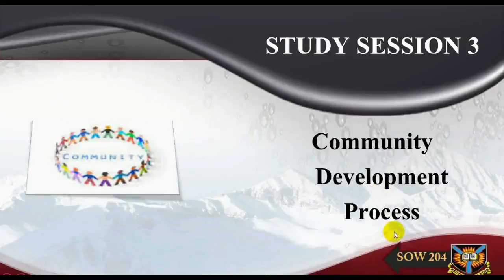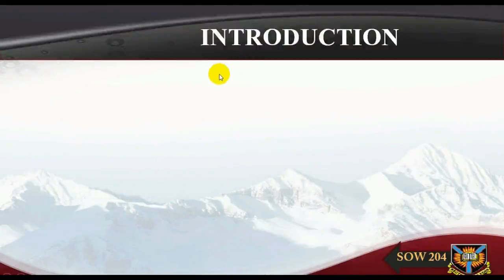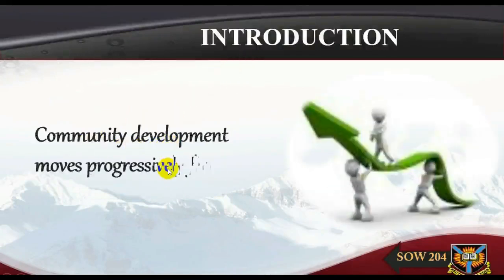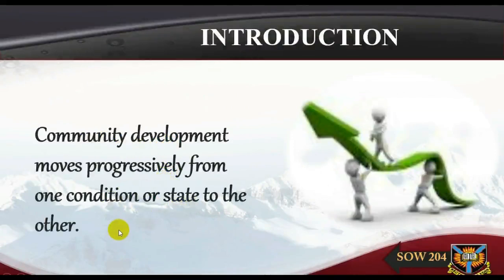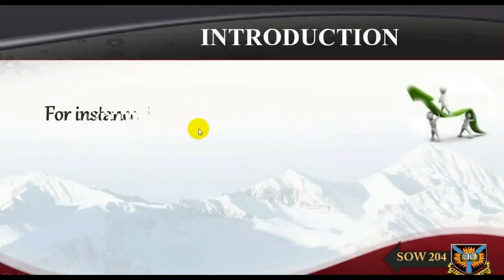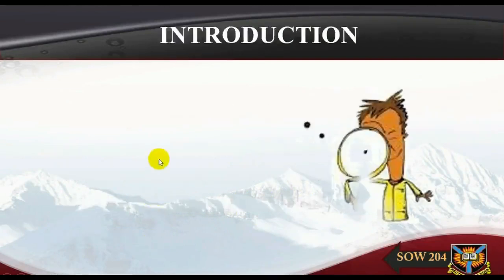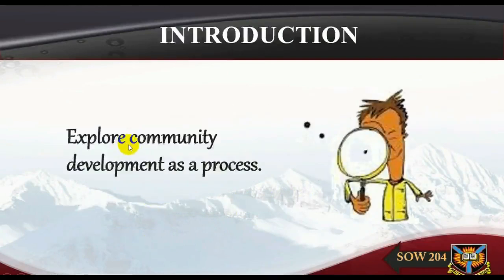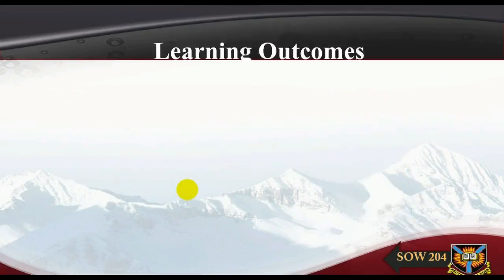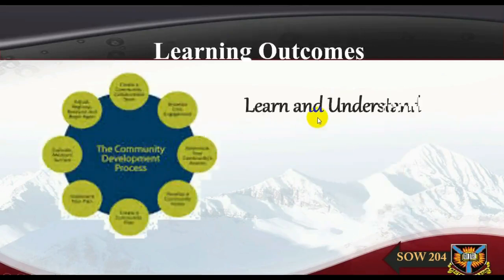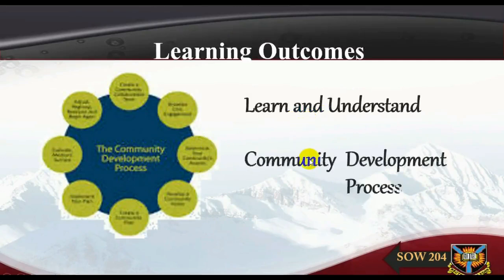The development process: introduction. Community development moves progressively from one condition or state to another — for instance, changing from where a small group of people from within or outside a local setup make decisions for the rest, to where the people themselves make decisions that affect them. In this study session we will explore community development as a process. Learning outcomes: when you have studied this session, you should be able to discuss community development as a process.